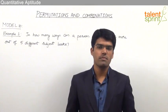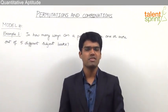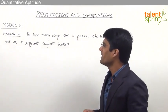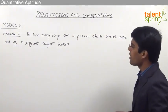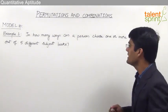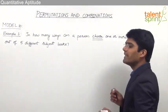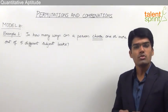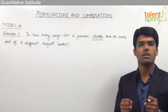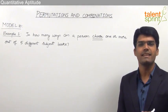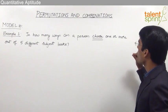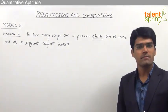Let us now take the tenth model from this topic of permutations and combinations, where we shall discuss some typical questions based on combinations. The first example is: in how many ways can a person choose one or more out of five different subject books? The word 'choose' clearly indicates this is a combination case, since selection is combination.